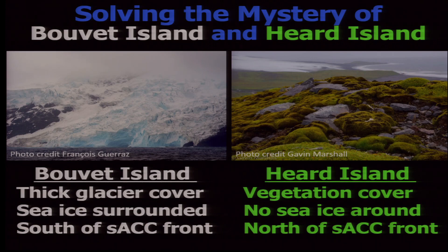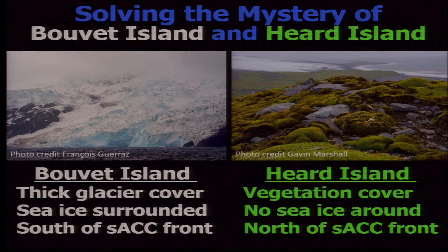Addressing this inadvertently solves another mystery: two islands — Bouvet Island and Heard Island — are both in the Southern Ocean about a thousand miles from the Antarctic continent. Bouvet Island is covered by thick glacier and has sea ice around it every year because it sits south of the boundary in the cold side of the ocean. Heard Island has vegetation cover and sea ice never reaches it because it stays north of the boundary on the warm side.